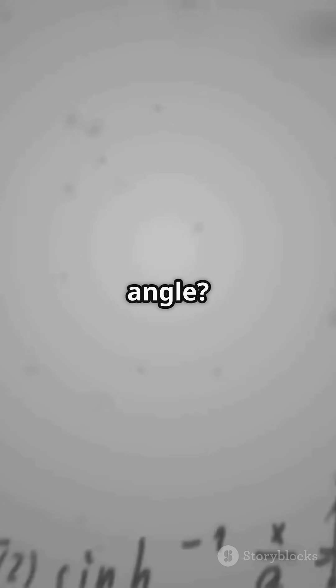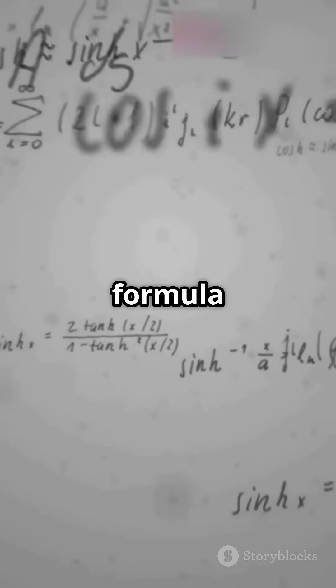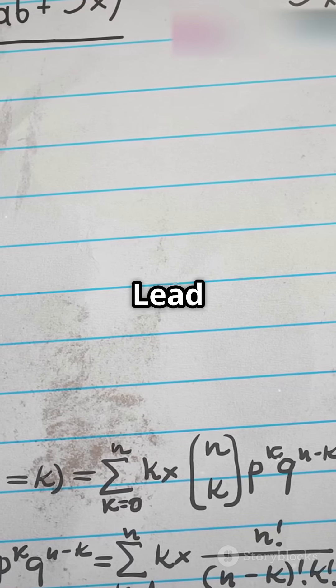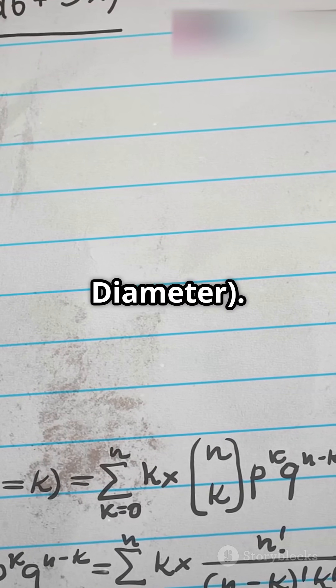So, how do you find the helix angle? Use this formula: tan helix angle equals lead divided by pi asterisk diameter.